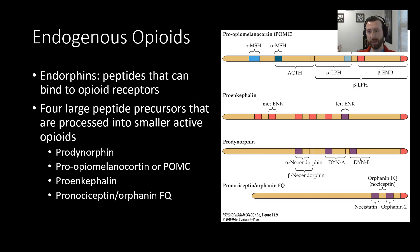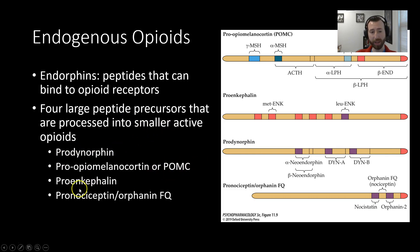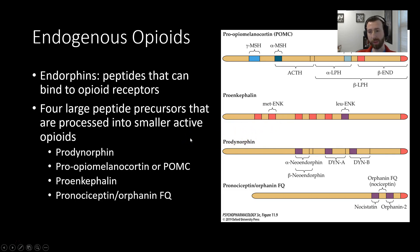Let's talk a little bit about these endogenous opioid signaling molecules. Endorphins are peptides that can bind to opioid receptors. There are four large peptide precursors that are processed into smaller active opioids. These big peptide precursors don't do anything until they are cleaved apart by enzymes. We've got prodynorphin, POMC, proenkephalin, and pronociceptin. These are displayed schematically, and you can see along the different sequences of these peptides, there are different chunks that can signal. An enzyme might come along to proenkephalin and cleave out some of the enkephalin molecules, and then those enkephalin peptides can go and bind to opioid receptors and do their thing.